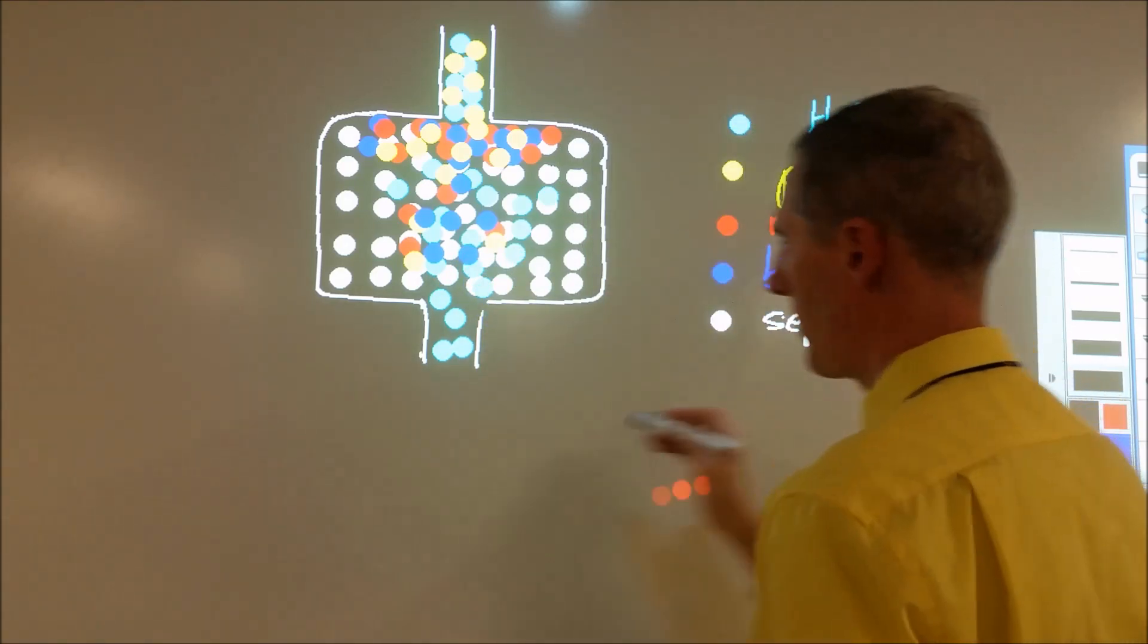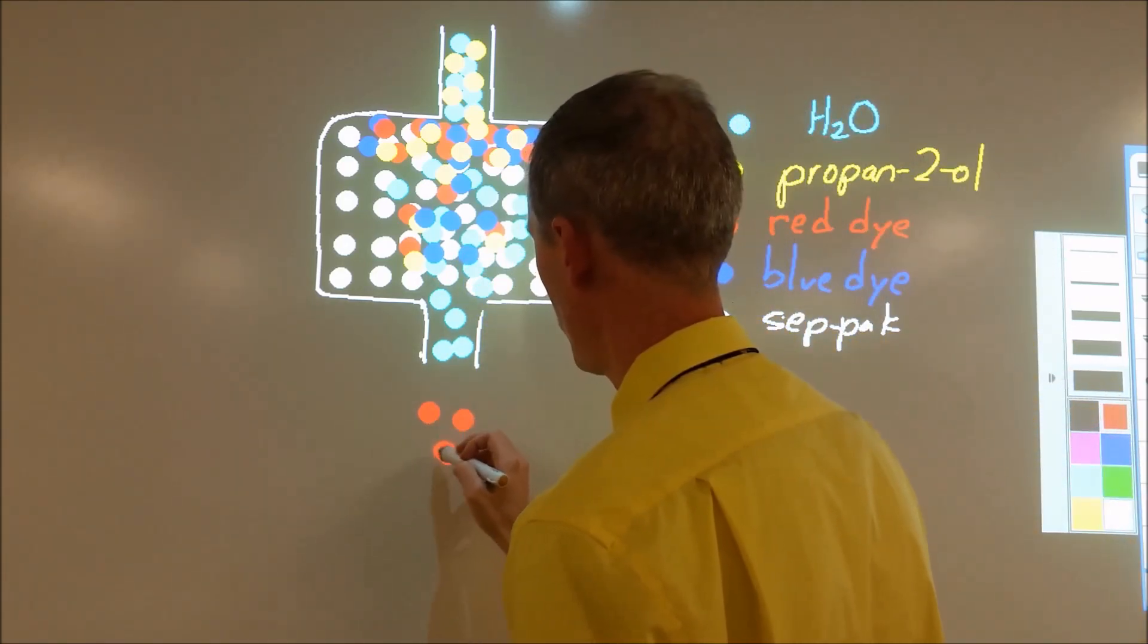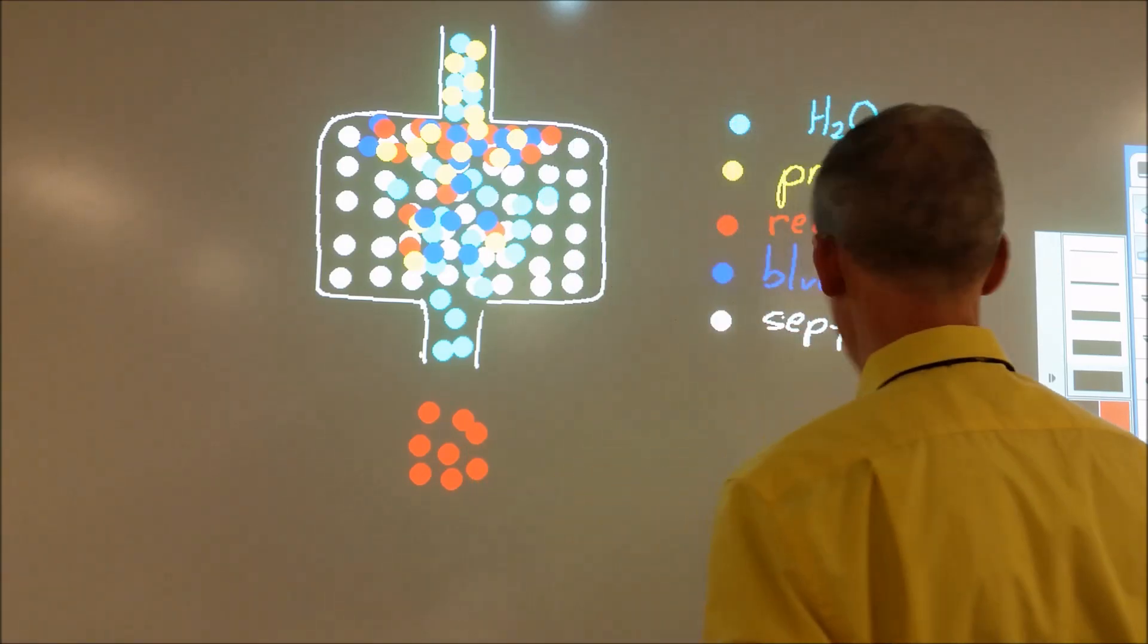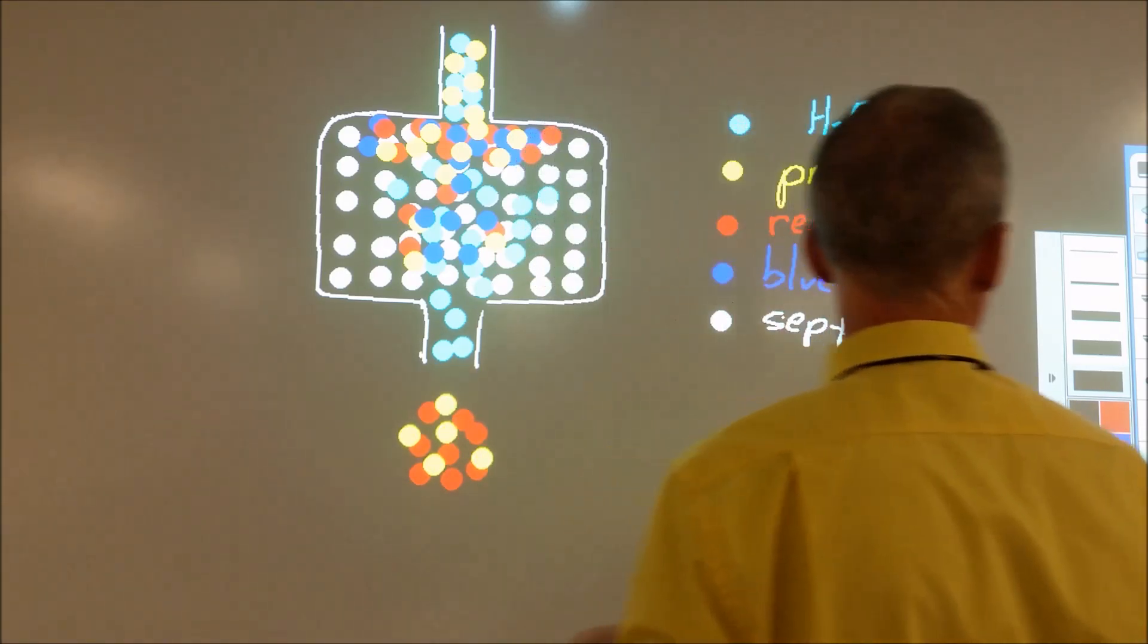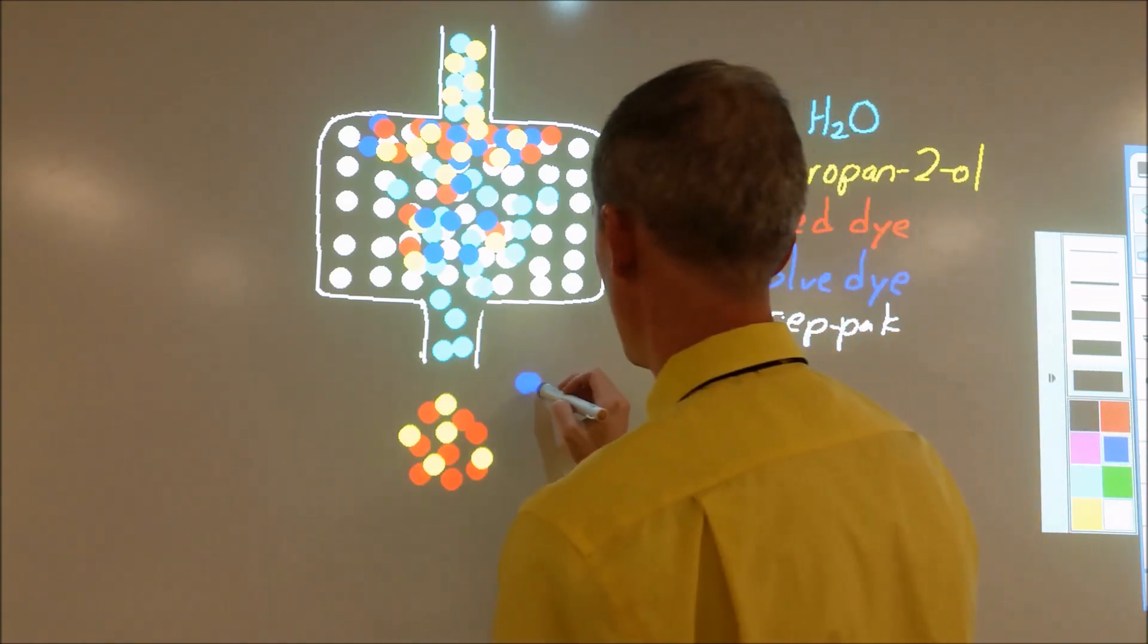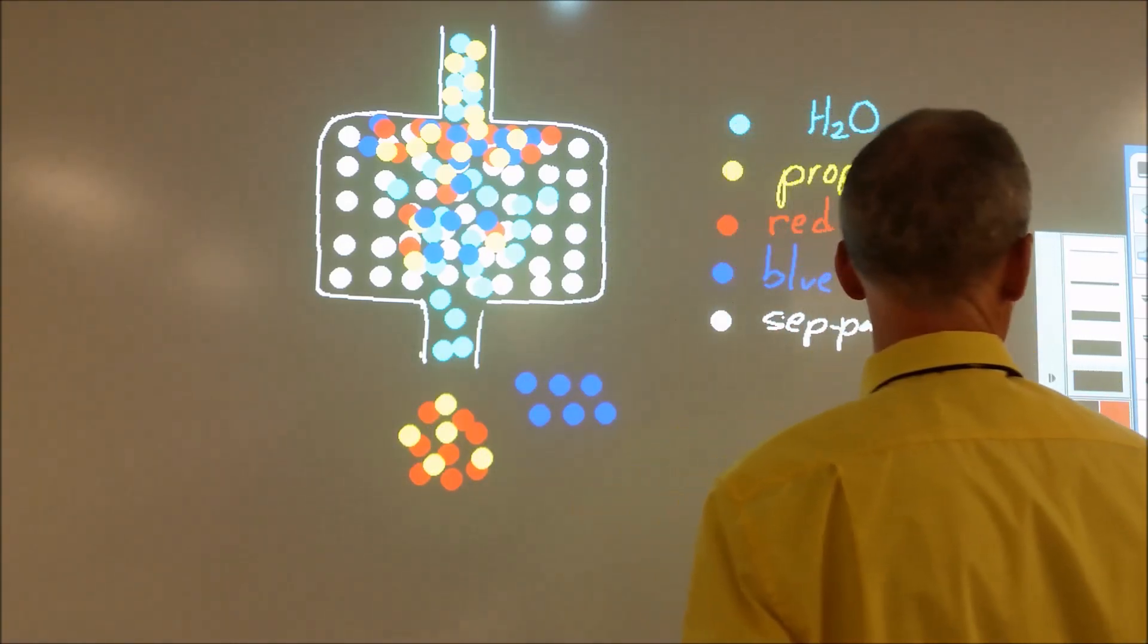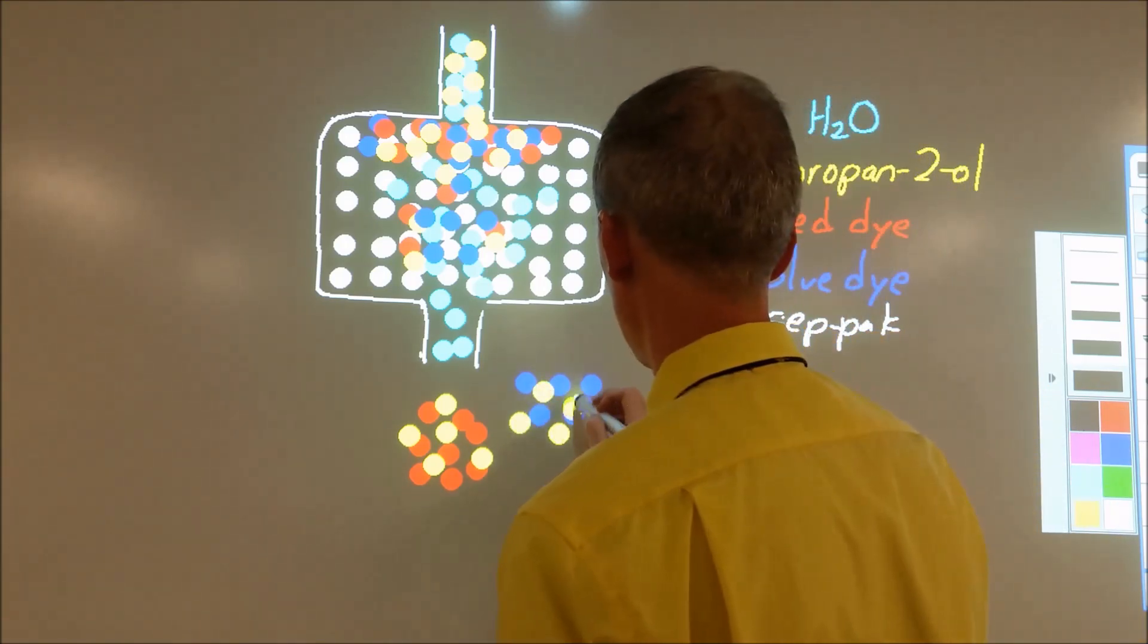And so what we see happening is the red particles have moved out first, and we separate out that where those are dissolved in some water and isopropanol. Then secondly, after that, that's when the blue particles start to come out, where there's a little bit of mixing in between.